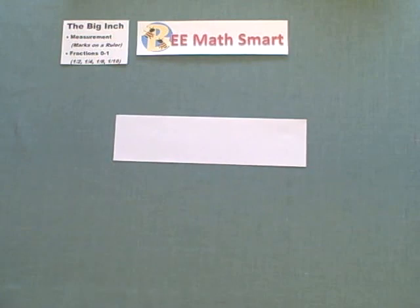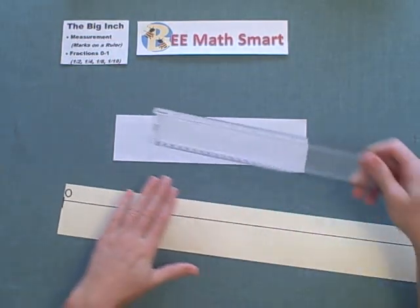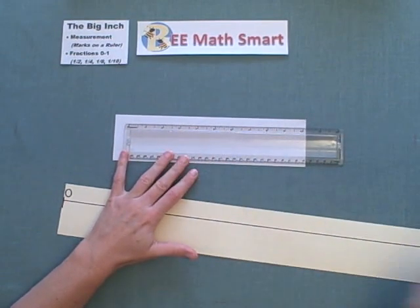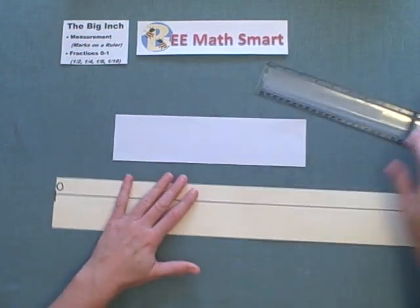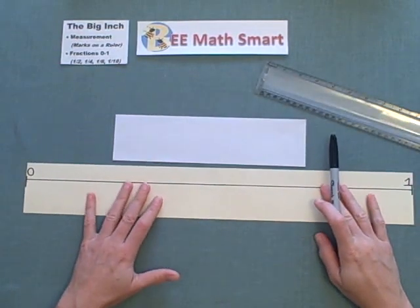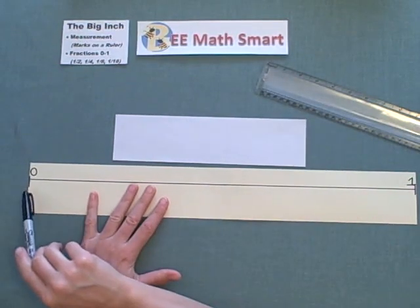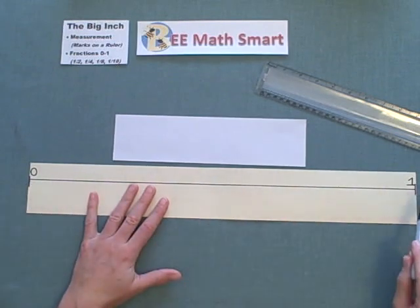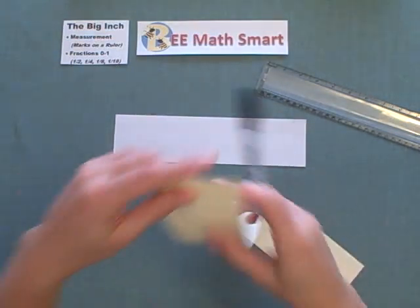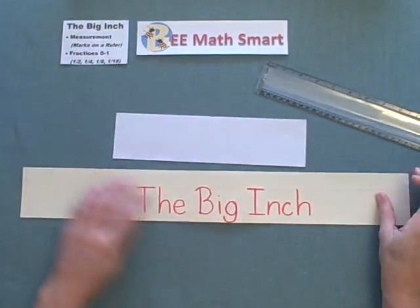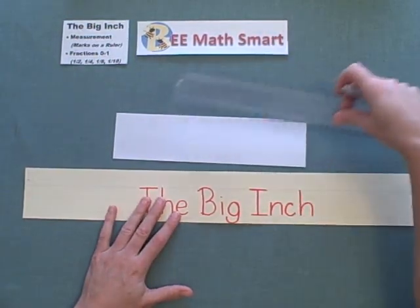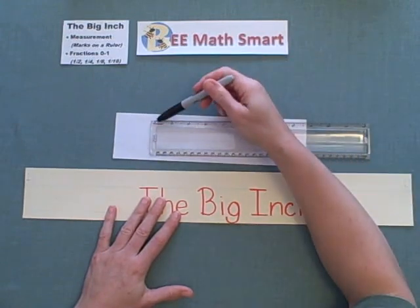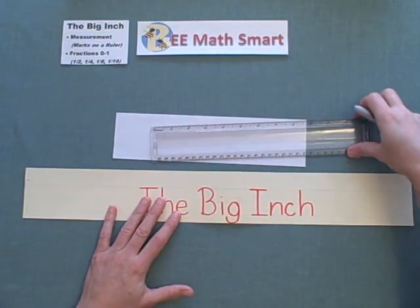Now, we are going to take that typical school supply ruler, and we're going to specifically be looking at the marks between zero and one. In order to do that, I have a piece of paper here, and I've put zero on one end and one on the other. I call this piece of paper the big inch so that we can take a careful look at what each of these marks means on a ruler from zero to one.